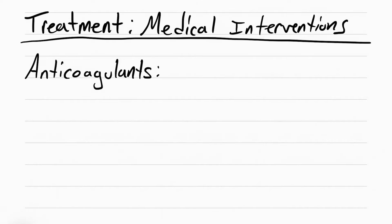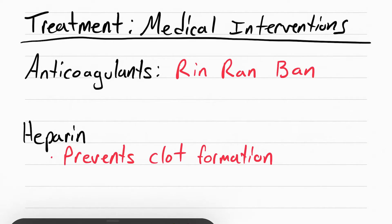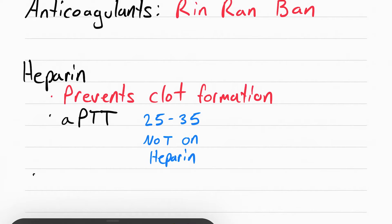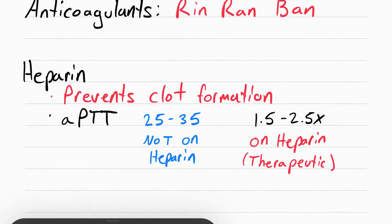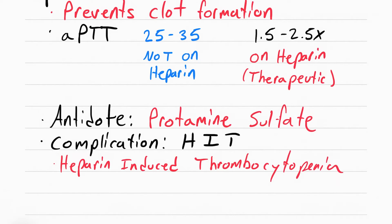The medical interventions use medications called anticoagulants, which all end in -rin, -ran, or -ban. The first common one is heparin, which is used to prevent further clots from forming — it doesn't dissolve the clot, it just prevents worsening. You want to monitor a lab called APTT, which stands for activated partial thromboplastin time. Normal APTT when not on heparin is 25 to 35 (some books say 30 to 40). While on heparin it should be 1.5 to 2.5 times that amount. If the patient has received too much heparin, give the antidote protamine sulfate. A complication of heparin is HIT — heparin-induced thrombocytopenia — an immune response where heparin causes activation and usage of platelets.